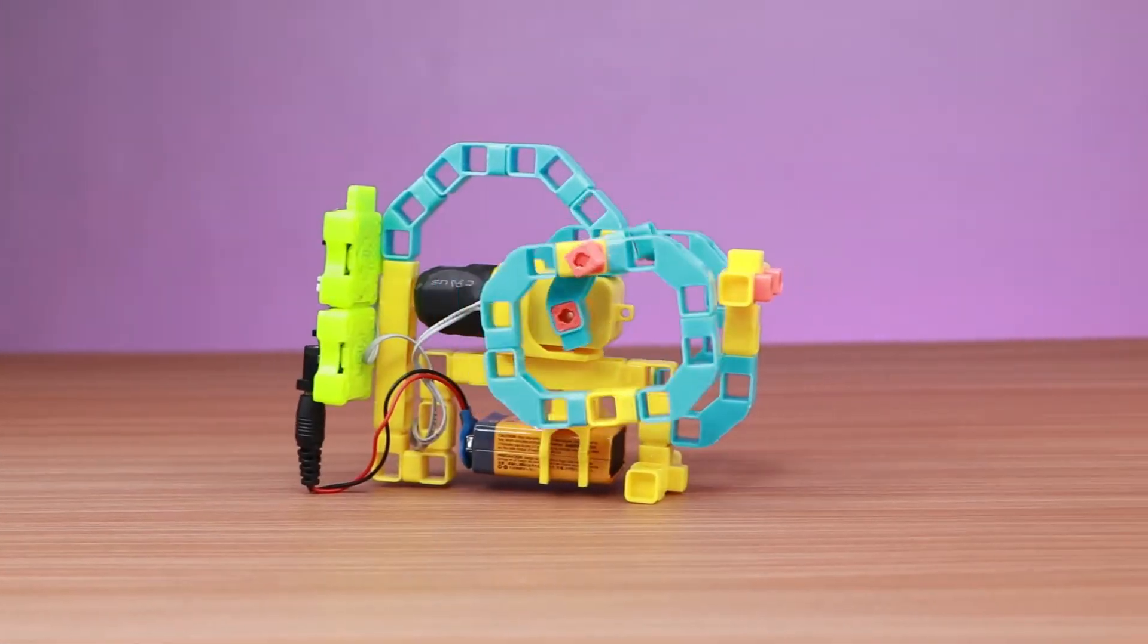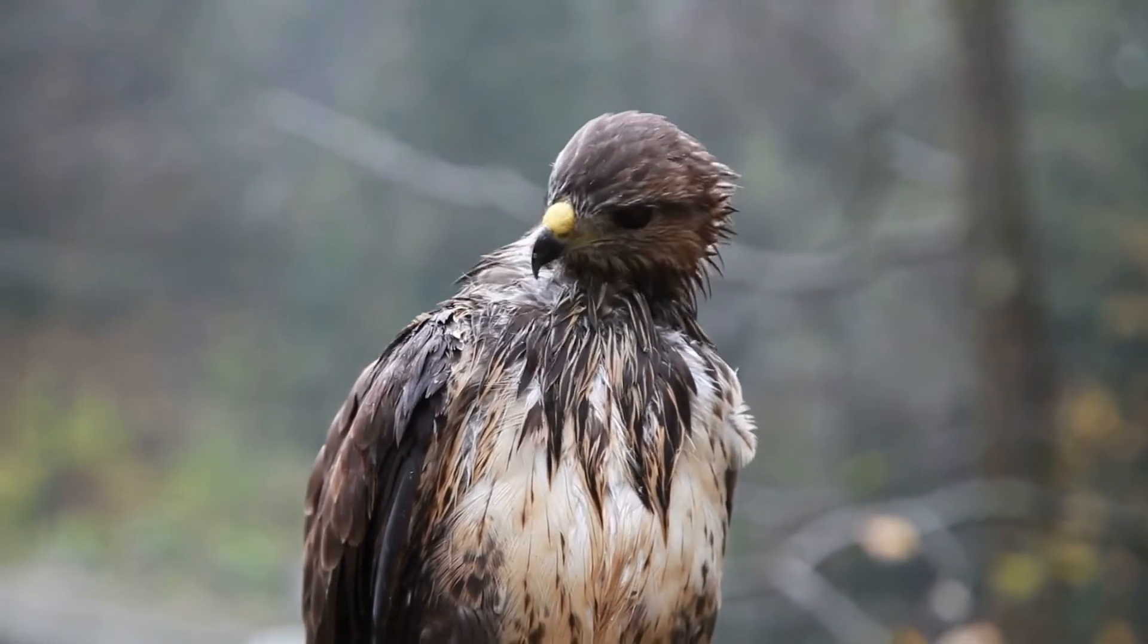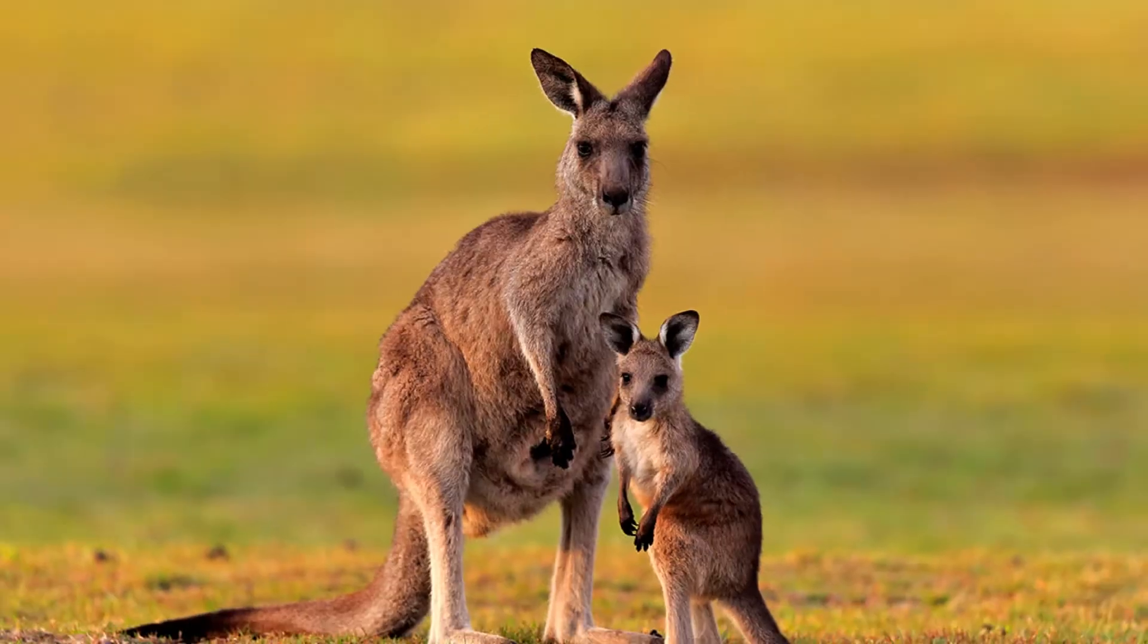In this project we will learn to create a hopping mechanism to move the robot forward. Lots of birds and animals use this hopping mechanism to walk like frogs, kangaroos, small birds like sparrows. Let's get started.